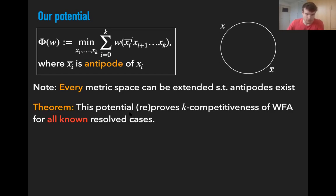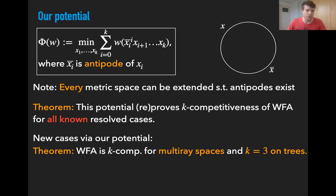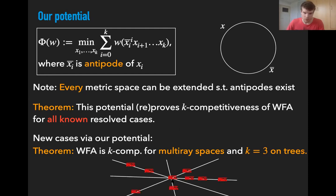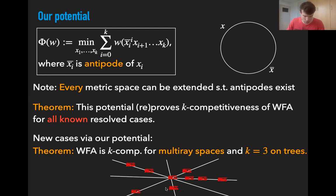This potential can be used to reprove k-competitiveness of the work function algorithm for all six known special cases listed previously. Moreover, using this potential we also get new results: we show that the work function algorithm is k-competitive on multi-ray spaces. Multi-ray spaces are spaces with several rays all starting at the same origin, where requests can appear anywhere on these rays. Note that a two-ray space is just the line, and if there are many rays but only one requestable point per ray we get a weighted star. So multi-ray spaces generalize the line and weighted stars — they are a kind of tree metric. And for arbitrary tree metrics, we show that if there are three servers, then the work function algorithm is three-competitive.